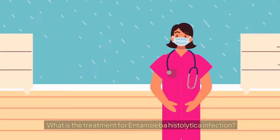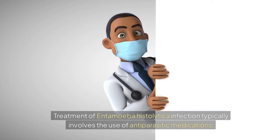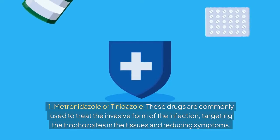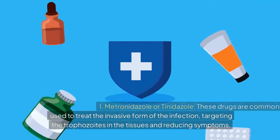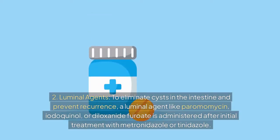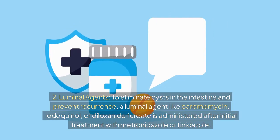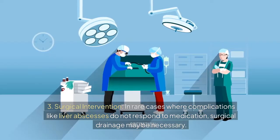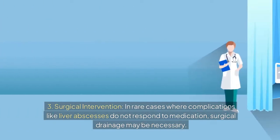Treatment of Entamoeba histolytica infection typically involves antiparasitic medications. Metronidazole or tinidazole are commonly used to treat the invasive form, targeting trophozoites in the tissues and reducing symptoms. To eliminate cysts in the intestine and prevent recurrence, a luminal agent like paromomycin, iodoquinol, or diloxanide furoate is administered after initial treatment. In rare cases where complications like liver abscesses do not respond to medication, surgical drainage may be necessary.